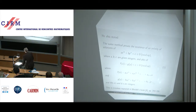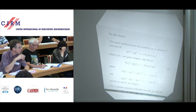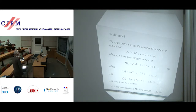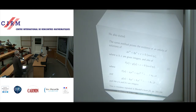He also stated the same method proves the existence of an infinity of solutions of AX to the M plus BY to the N plus C congruent to 0 mod XY, and also of FX plus GY plus C congruent to 0 mod XY, where FX equals A-naught X to the M plus A1 X to M minus 1 plus ... plus A_{M-1} times X, and G is defined similarly with coefficients B instead of A and of degree N instead of M, with all coefficients integers.